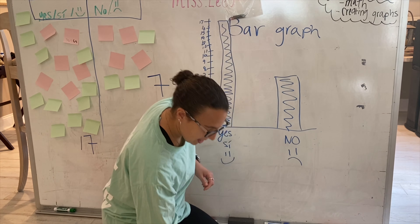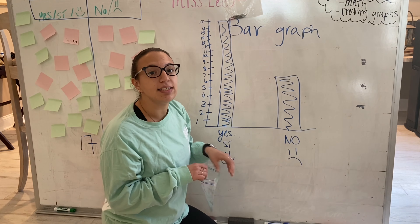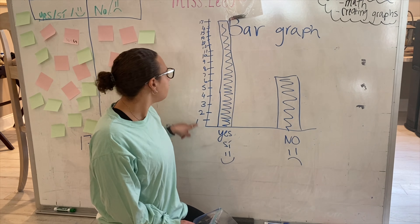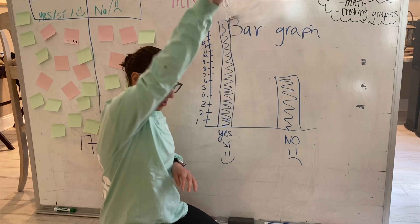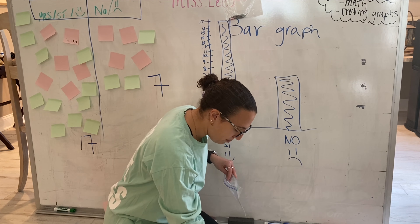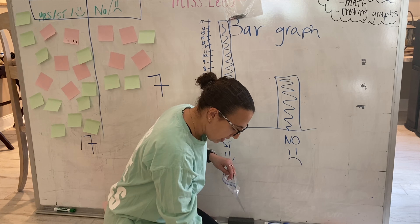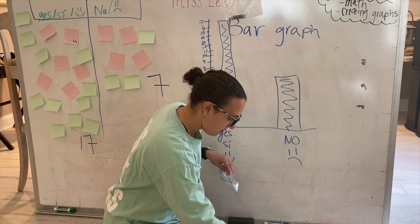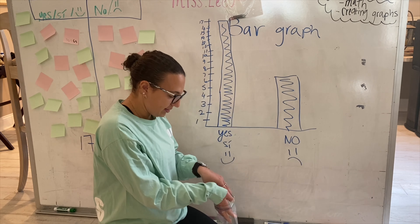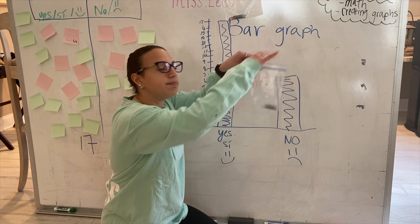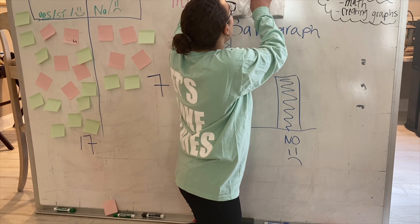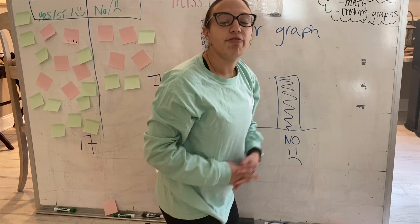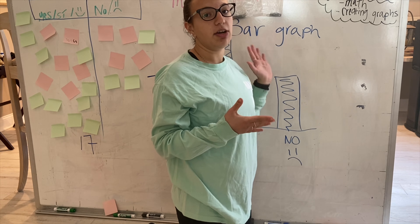Now, how many kids did not like the food from our taste test? Seven. So let's put seven paper clips in our little baggie. Seven. And those are some fun ways of representing our data.